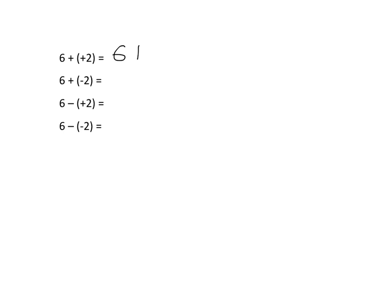Some of it's fairly obvious. Positive 2 is just the plain old number 2 that we've always been dealing with since we were in grade 1. So 6 plus positive 2 must just be the same as saying 6 plus 2. And similarly, if we say 6 minus positive 2, positive 2 is just the plain old 2, so this must just be the same as 6 minus 2.